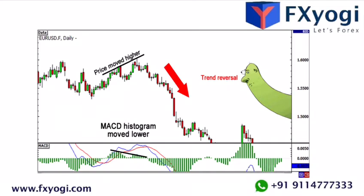You can see from the picture that as price is moving higher, MACD was getting smaller. This means that even as the price was still trending, momentum was beginning to fade out. From this information we can conclude that a trend reversal is highly likely.